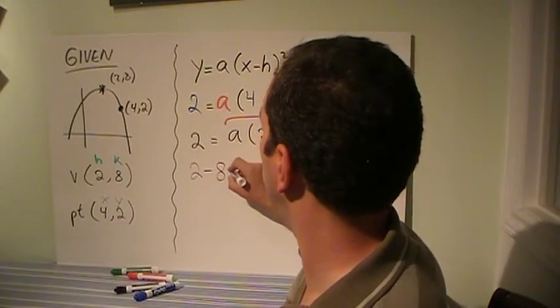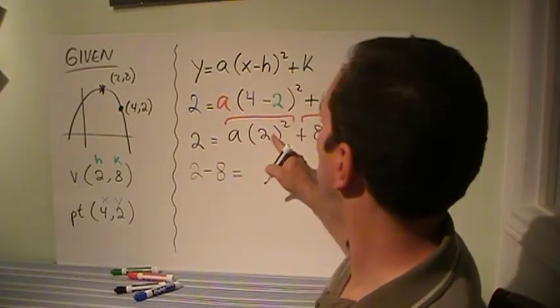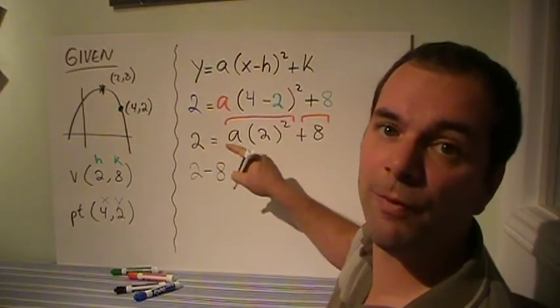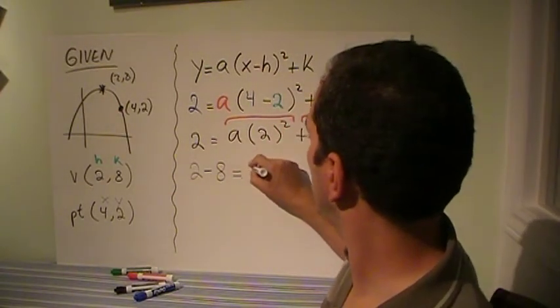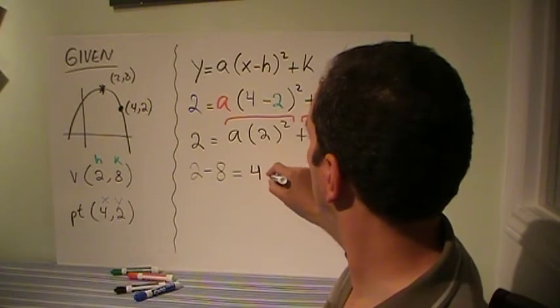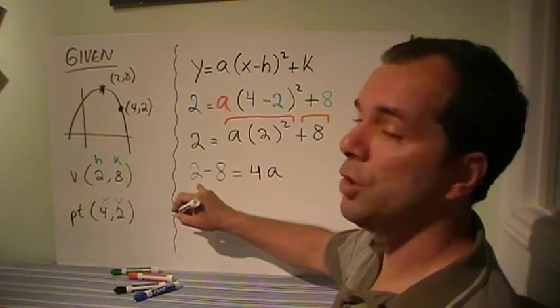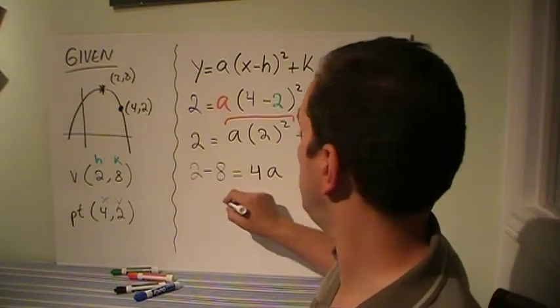2 minus 8 is equal to... Now 2 squared is 4, so I'm just going to put the 4 in the front. That's 4a. 2 minus 8 is equal to minus 6.